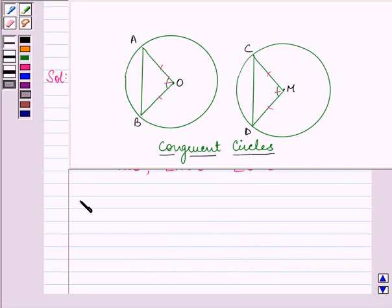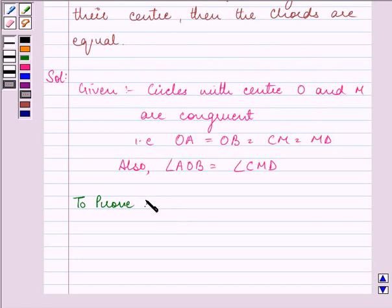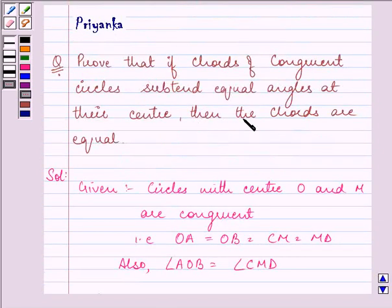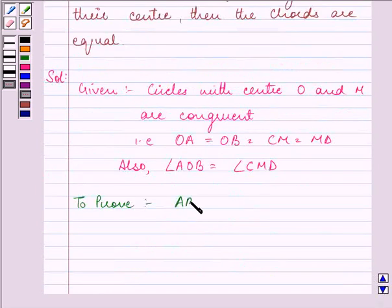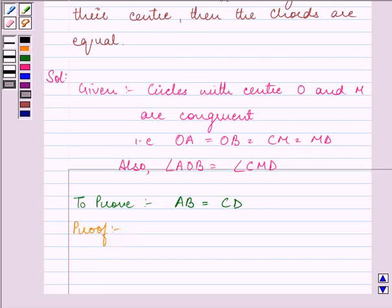What we need to prove is, we need to prove that the chords are equal. So we need to prove that AB is equal to CD. Let us start with our proof.